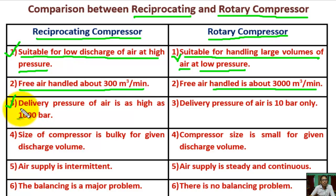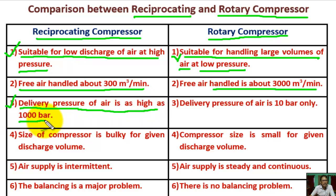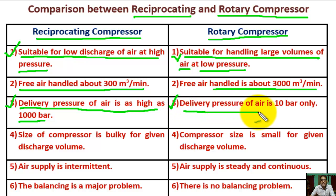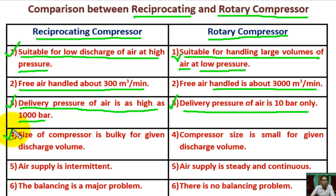Point 3: For reciprocating compressor, the delivery pressure of air can be as high as 1000 bar. For rotary compressor, the delivery pressure of air is 10 bar only — the maximum delivery pressure is 10 bar.